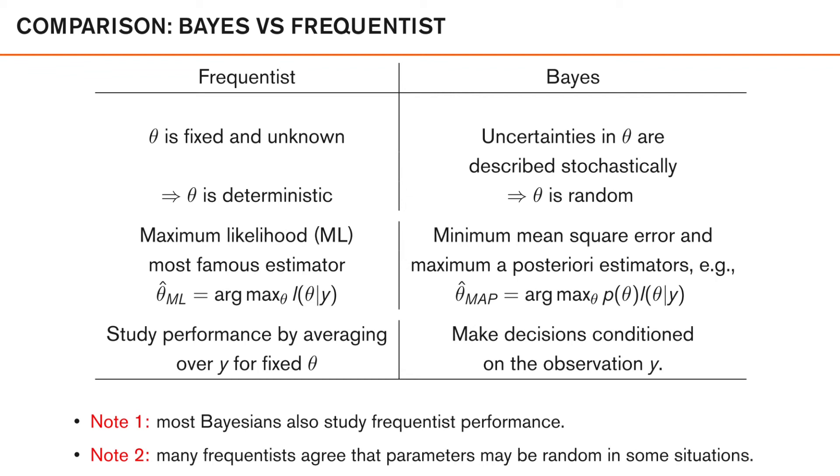So lastly, when it comes to optimality, in the Bayesian framework, we make decisions conditioned on the observation y and take the expected value over the parameter theta. In the frequentist setting, on the other hand, theta is deterministic, so there is no way we can average over theta. Instead, we study performance by averaging over y for fixed thetas.